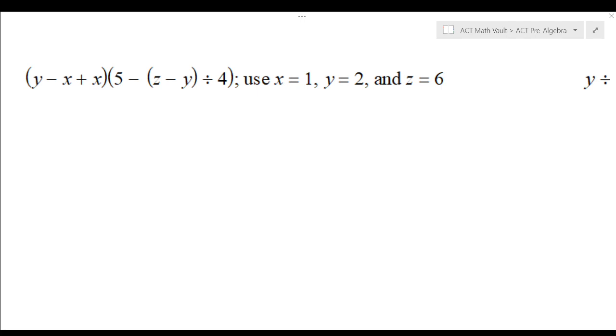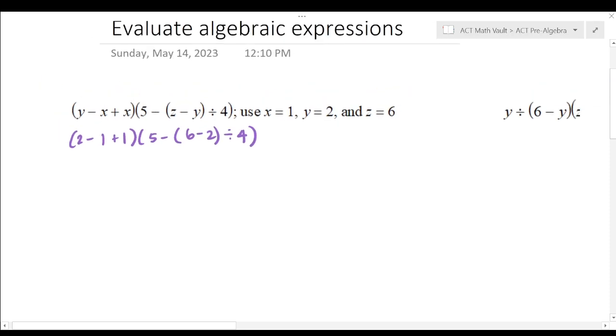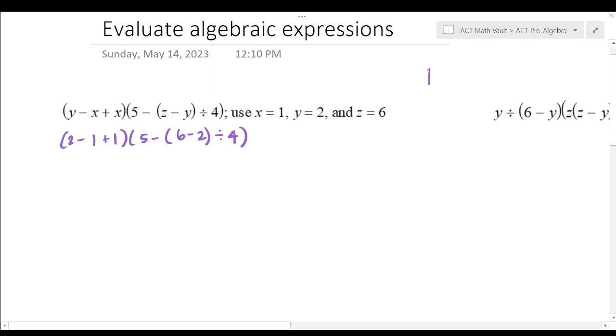All right, so what I'm going to do first is rewrite 2 minus 1 plus 1. We have a 5 minus 6 minus 2 divided by 4. Okay, before I do anything, I have to remember, please excuse my dear Aunt Sally.